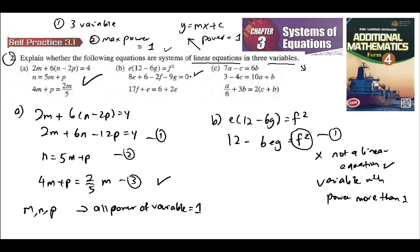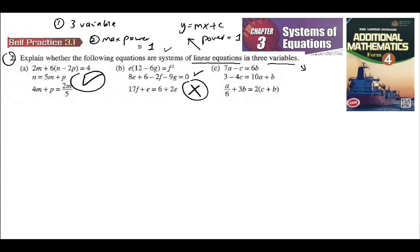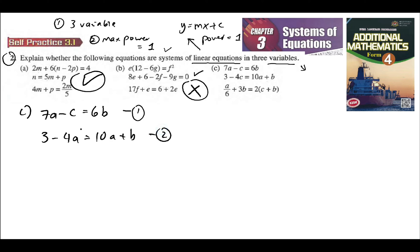So this one is correct — it is not a linear equation — and this one is wrong. For C, you have 7A minus C is equal to 6B, so you have three variables: A, B, and C. The second equation is 3 minus 4C is equal to 4A plus B. The third equation is A over 6, which is 1 over 6 A, plus 3B is equal to 2C, and 2 times B is 2B.